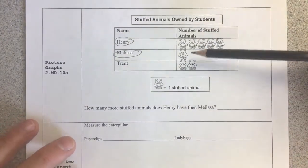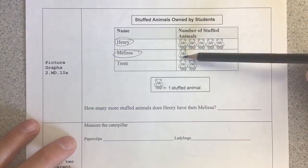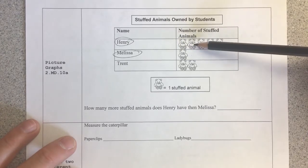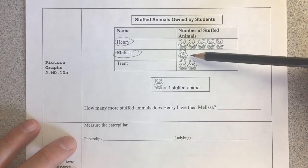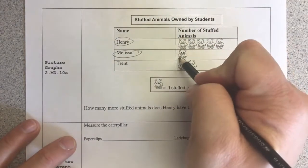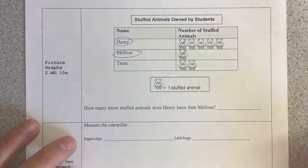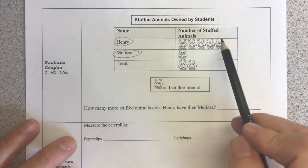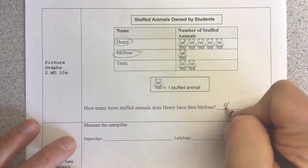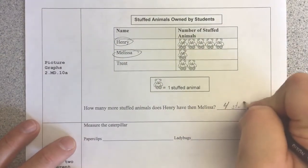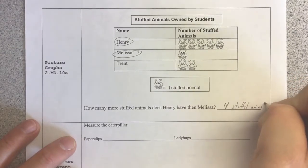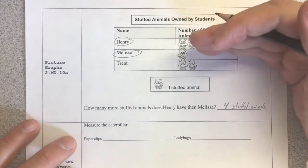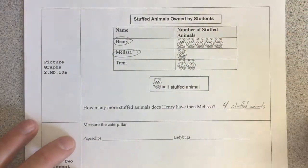I want to know how many more does Henry have than Melissa? There's a couple different ways. Since they're right next to each other, I can say here, they're the same. So 1, 2, 3, 4. I can also use a crossing out method. So I can cross out Melissa, 1 there, 1 there. Now how many do I have? 1, 2, 3, 4. So 4 stuffed animals. I'm just looking at the difference between Henry and Melissa in regards to stuffed animals.